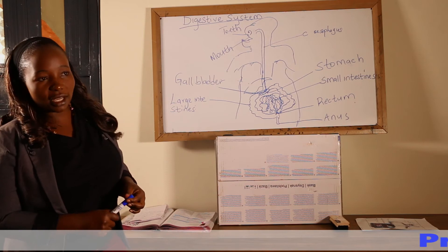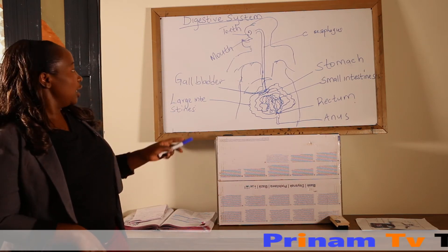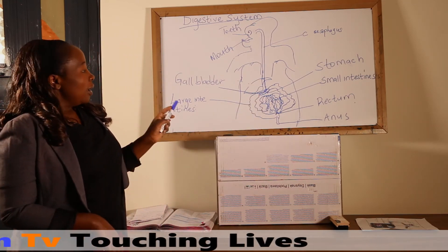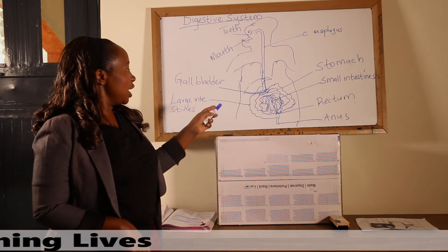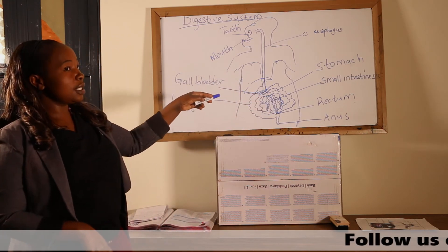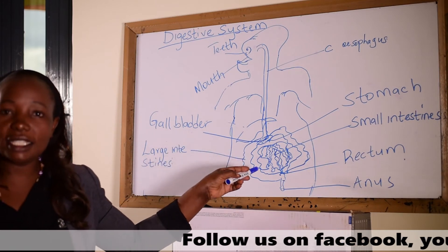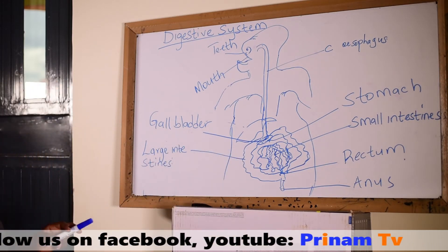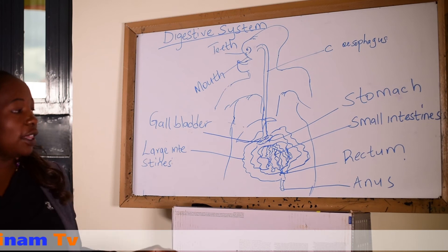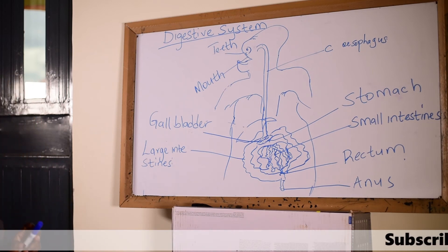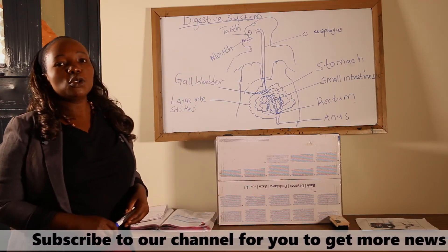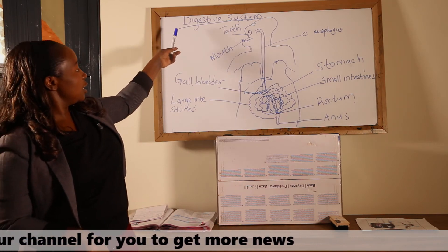So learners, to recap: digestion of food starts in the mouth and ends in the small intestines. After being absorbed through the small intestines, what remains is then processed in the large intestines — that is the mineral salts and water. The waste products are stored in the rectum, ready to be expelled through the anus. Today we have learned about the digestive system.